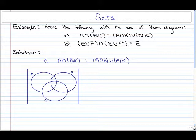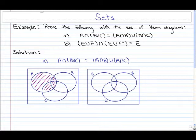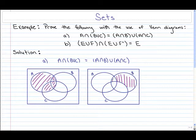The easiest approach is to figure out the shaded region of just A — that's the entire circle of A, including all its sections. Then we figure out B union C, which would be all of B as well as all of C. That shaded region here represents B union C.